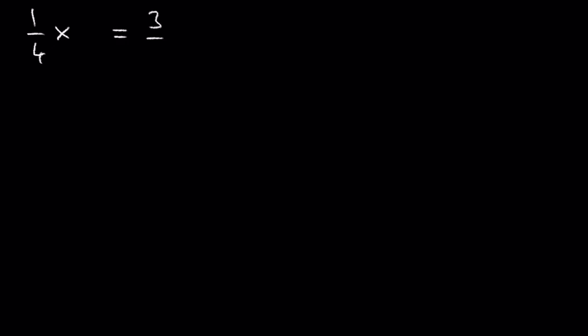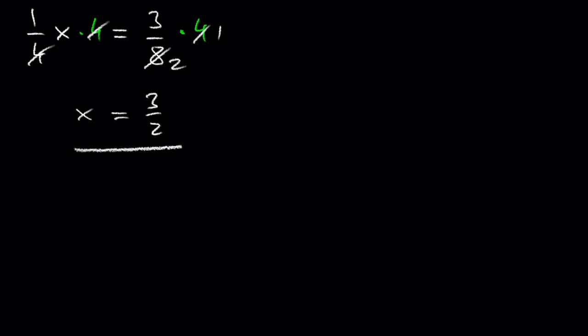Let's do another one with cross multiplying: 1 over 4x is equal to 3 over 8. Multiply by 4 over 1 on both sides of the equation, which means multiply by 4. Simplifying gives x is equal to 3 over 2. These are just some of the basics — for other kinds of equations involving multiple fractions, please check out my upcoming videos.